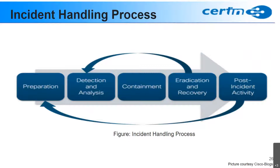The Cisco incident handling process consists of five stages: preparation, detection and analysis, containment, eradication and recovery, and post-incident activities. Let us discuss them one by one.